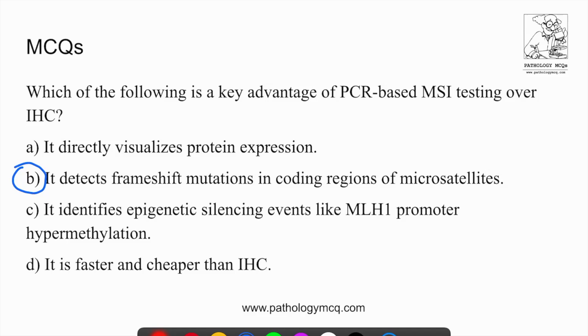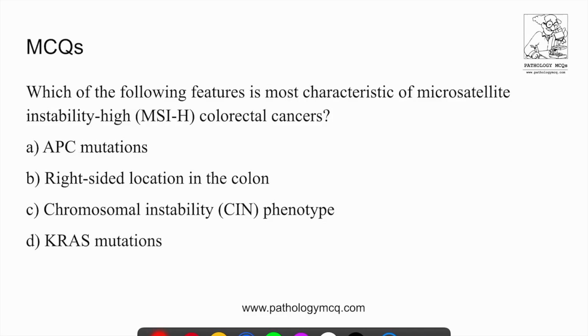These mutations may or may not express in IHC, but frameshift mutations PCR may detect these. So in that way, it's better than IHC. And next one, which of these is most characteristic of microsatellite instability tumors? APC mutations are not associated with MSI tumors. As we discussed, MSI high tumors, they have, if it's sporadic, they'll have BRAF mutations.